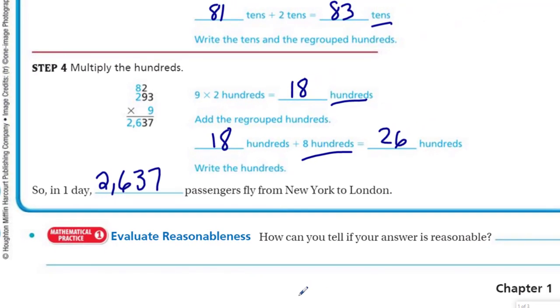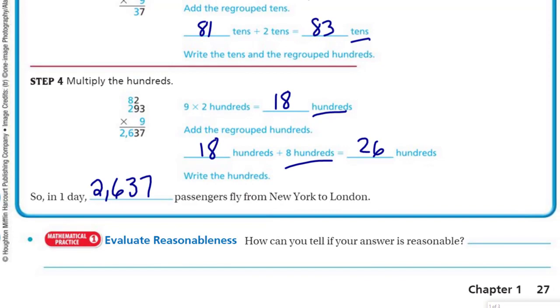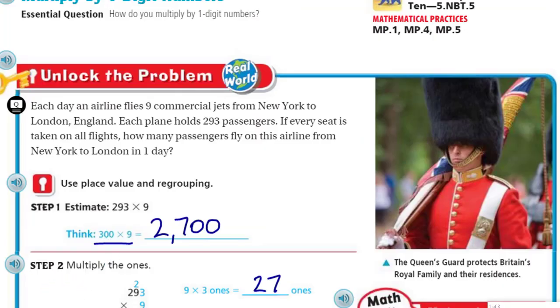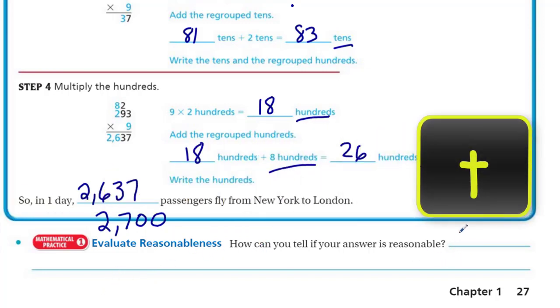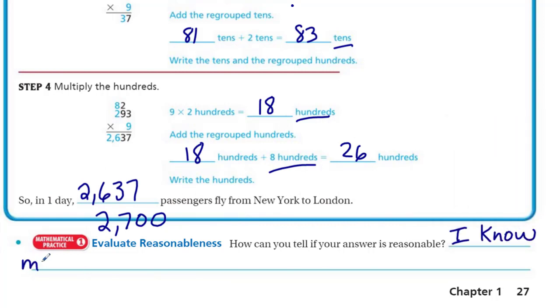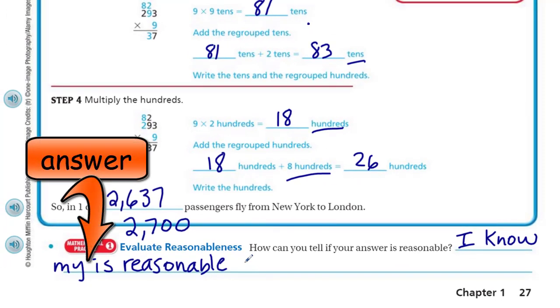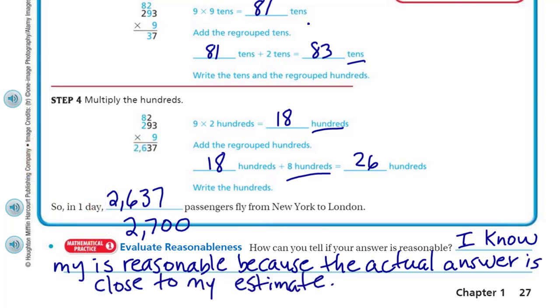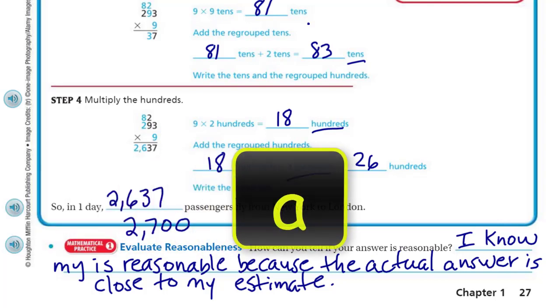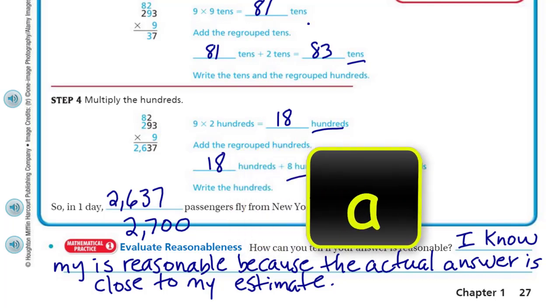How can you tell if your answer is reasonable? Well, I think one way we can tell that our answer is reasonable is, remember, we made an estimate at the beginning of this particular problem. Let's take a look. Didn't we say that we were estimating 300 times 9 was equal to 2,700? And look at our answer here, 2,637. That's extremely close to our estimate. That lets me know that my answer is reasonable. So I would say, I know my answer is reasonable because the actual answer is close to my estimate. And there's different ways you could write that. That's just the way that kind of made sense to me. You could rephrase that. That's the beauty of writing things in your own words because it helps with your own comprehension, your own understanding. Copying from a neighbor doesn't help.